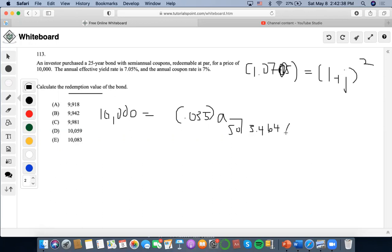Plus we don't know the redemption value, so v to the 50. The problem says there are semi-annual coupon bonds redeemable at par. Whenever the semi-annual coupons are meant to redeem at par, that means the semi-annual coupons also equal the redemption value. That means this is also done out of x as well.